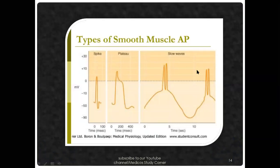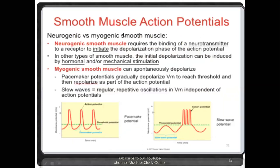You need to know the different types of action potentials: spike action potential, plateau, calcium, and slow-wave. These three types have different maximum values, minimum values, and resting membrane characteristics. For smooth muscle action potentials, there are two types: neurogenic and myogenic. Neurogenic smooth muscles require the binding of a neurotransmitter such as acetylcholine or norepinephrine to a receptor to initiate depolarization.